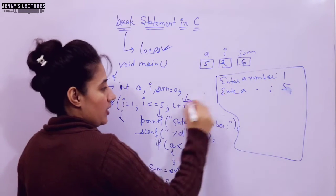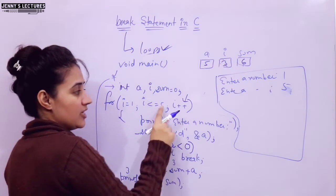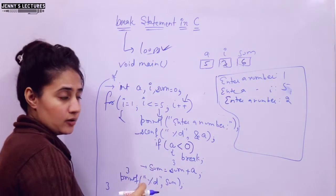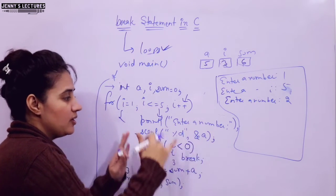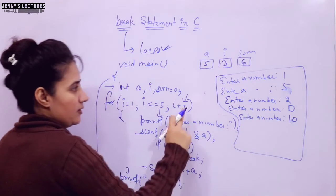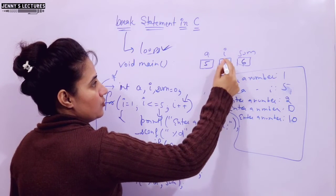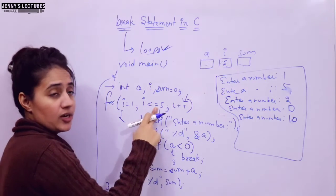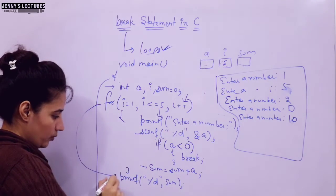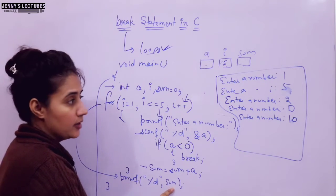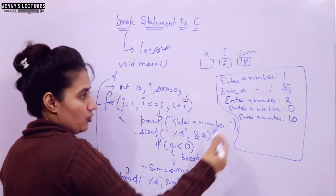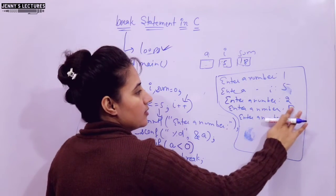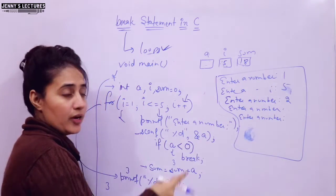i becomes 3, condition true, enter a number - suppose I enter 2. Program runs till i equals 5, asking five times total. After i becomes 6, 6 is not less than or equal to 5, so it exits the loop. After the loop we have printf sum - it is going to print the sum of all five numbers, which is 18.